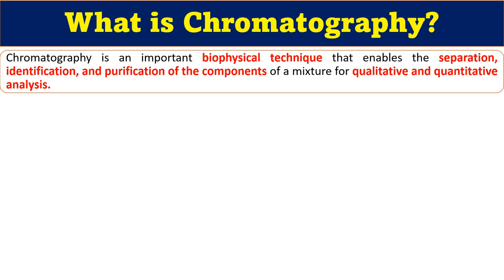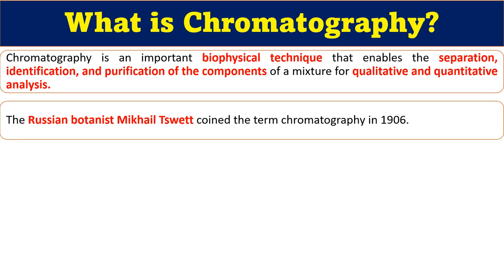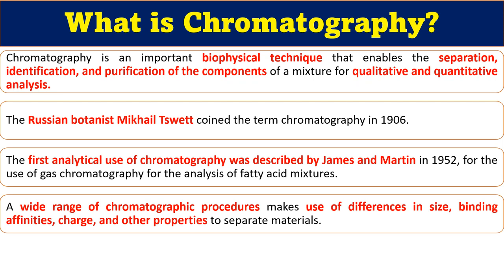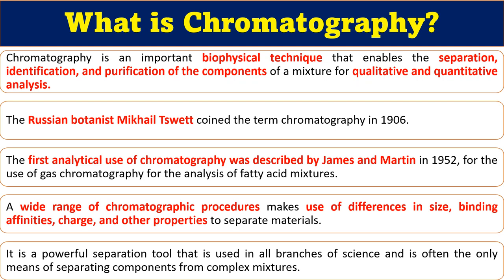There are different types of chromatography—liquid, gas, ion exchange, affinity, and others—which we will talk about later. The term 'chromatography' was first used by the Russian botanist Mikhail Tswett in 1906. The first analytical use of chromatography was described by James and Martin in 1952 for the usage of gas chromatography for the analysis of fatty acid mixtures. After that, a wide range of chromatographic procedures were developed based on different criteria such as size, binding affinity, charges, and other physical and chemical properties.